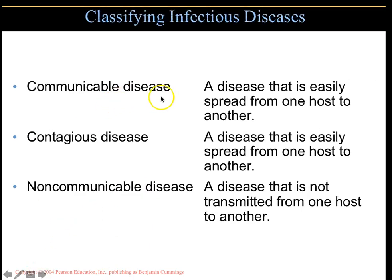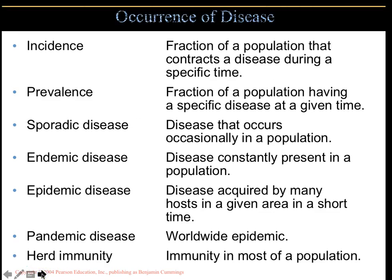Communicable means a disease can spread from one person to another; contagious means it spreads easily. Non-communicable diseases, like rheumatoid arthritis, are not transmitted from one host to another. Autoimmune diseases are a good example — there is no way a person with lupus, Down syndrome, or type 1 diabetes can give you that disease.